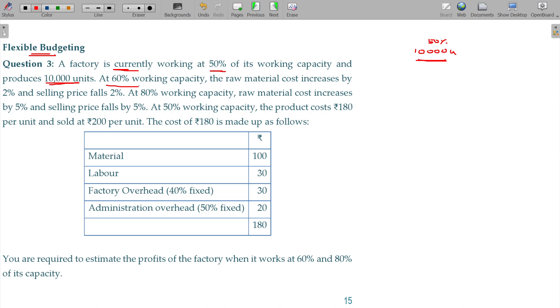At 60% working capacity, the raw material cost increases by 2% and selling price falls by 2%.